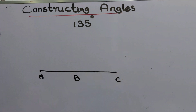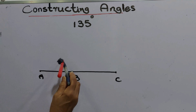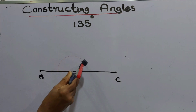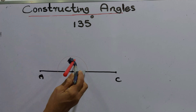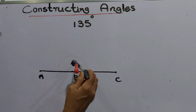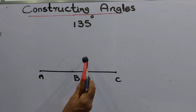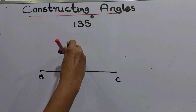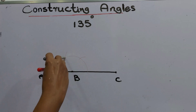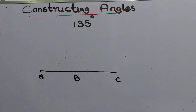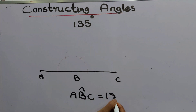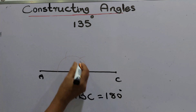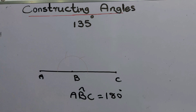B C. Then the next step: keep the compass point on B and draw a full arc. When the arc meets the ABC line, keep the compass point there. That is 60 degrees from here to here, another 60 degrees from here to here, another 60 degrees — that means the ABC angle is 180 degrees. This is a straight angle.